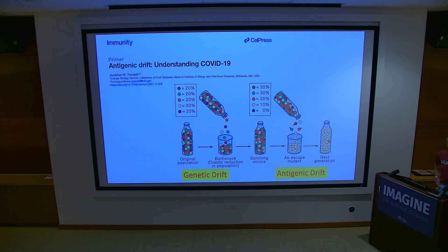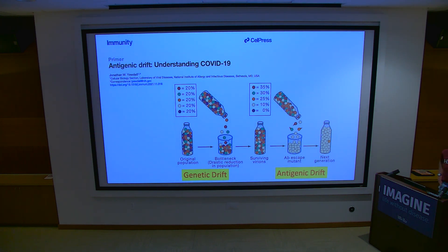One review is on antigenic drift. Antigenic drift, we all knew, was famous from flu. Now it's again famous because of SARS-CoV-2. The Immunity journal has these primers for people who aren't necessarily virologists, just to bring you up to speed.